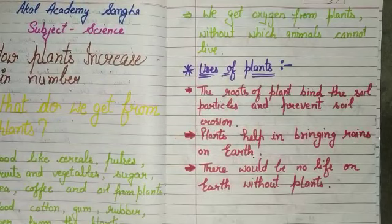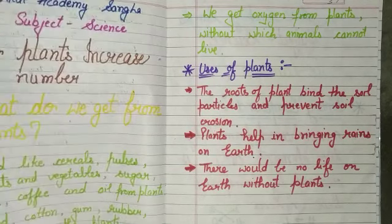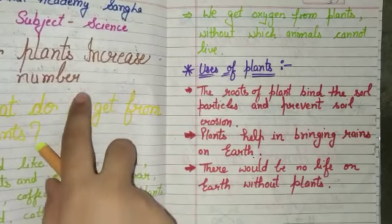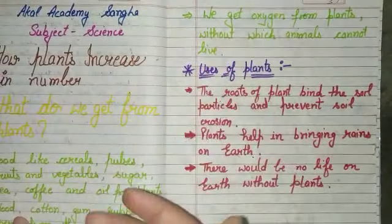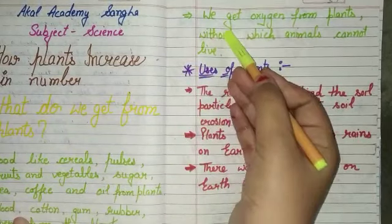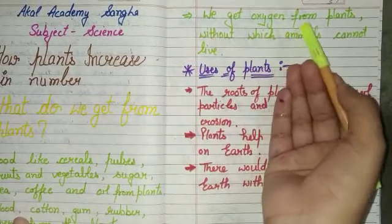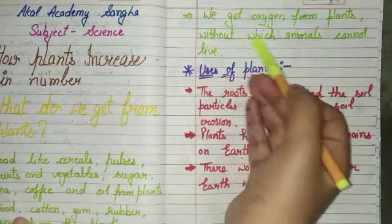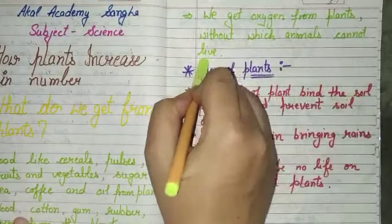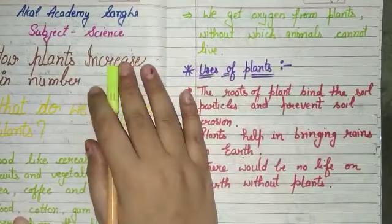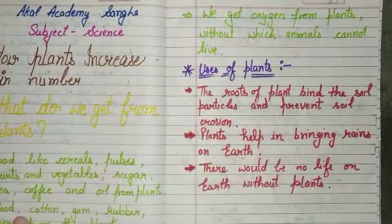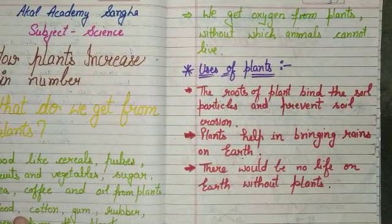We know that oxygen is very essential for everyone. Oxygen also comes from plants. We get oxygen from plants, without which we cannot live on earth.